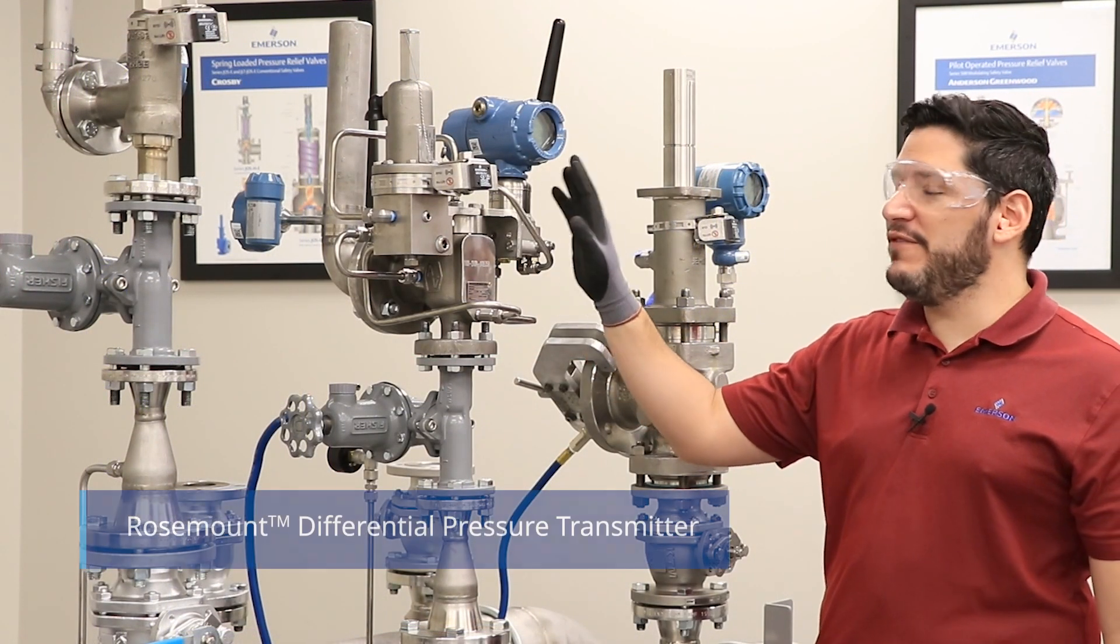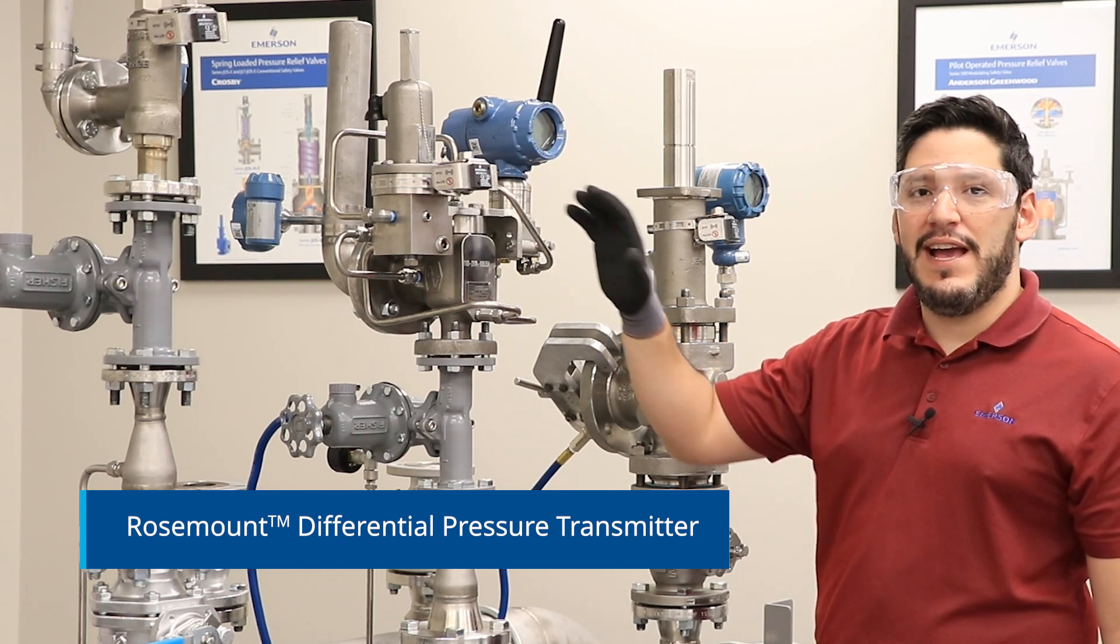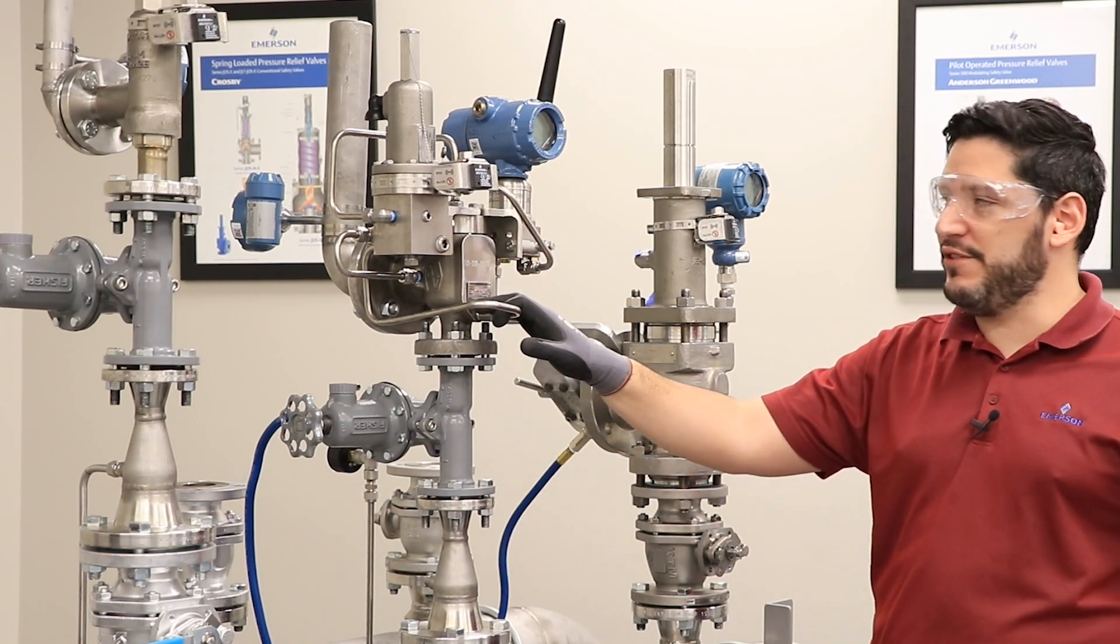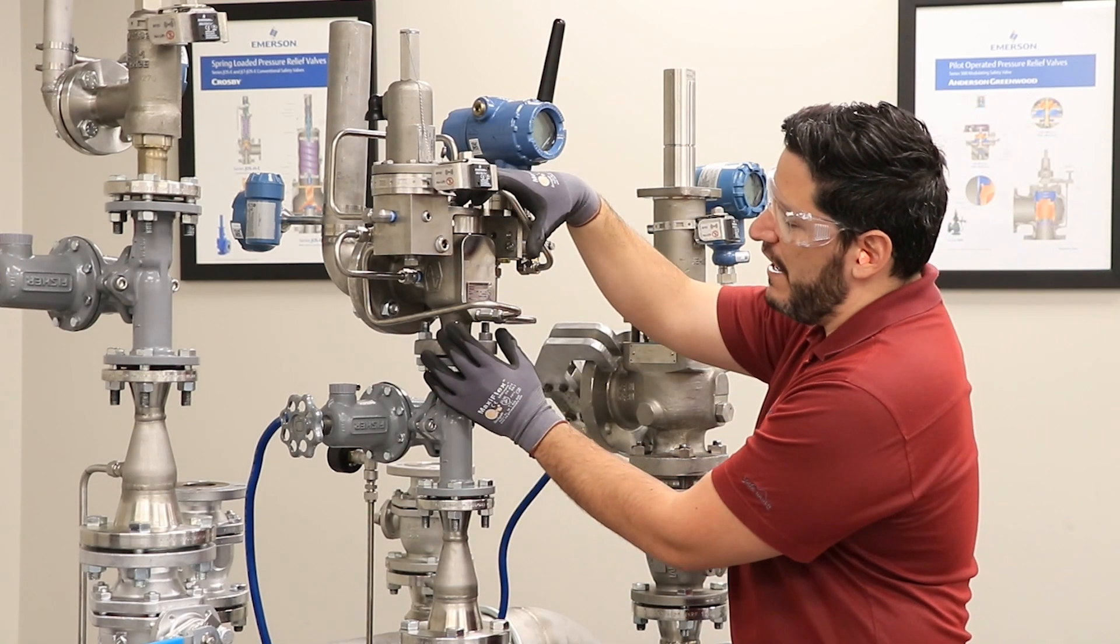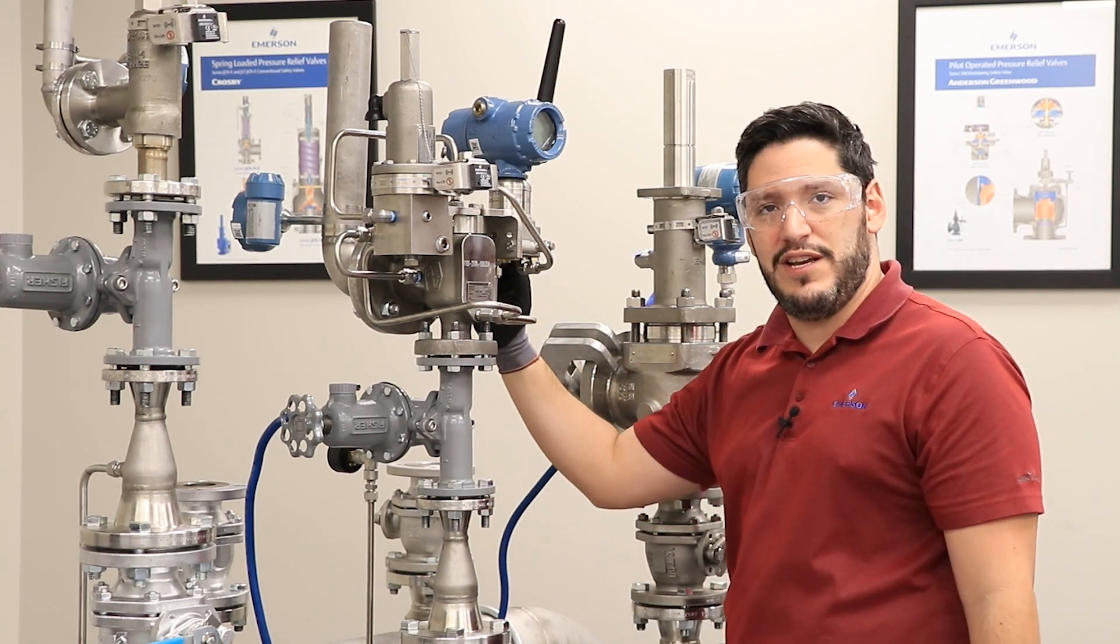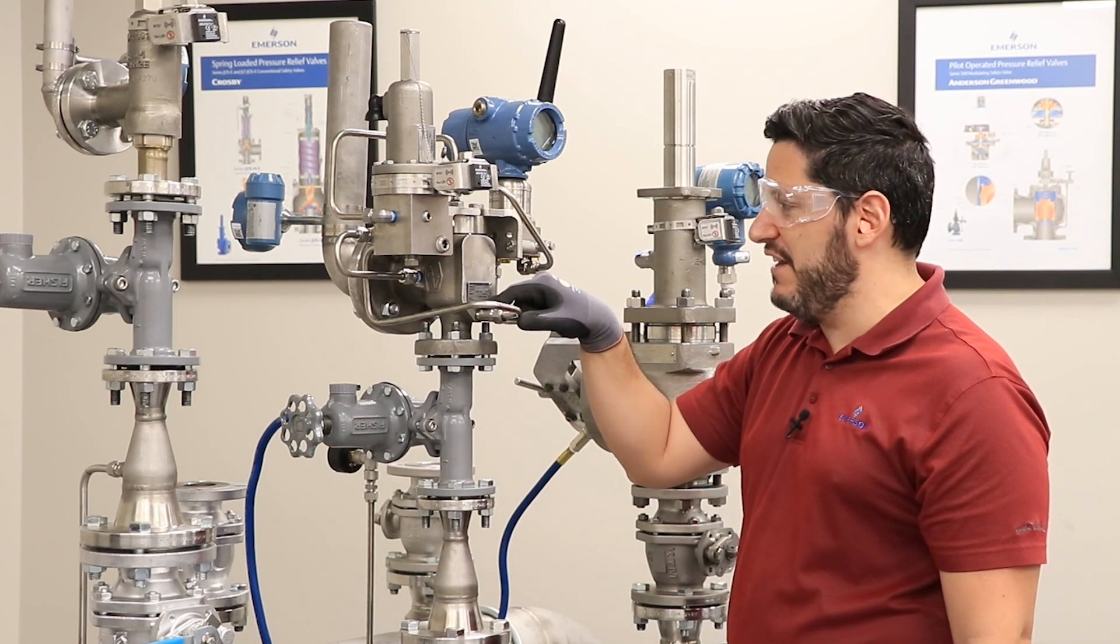This is our differential pressure transmitter, which we use for our high pressure and low pressure Emerson pilot operated relief valve monitoring. The way that this works is the main valve has a pressure pickup port. We take the high side of the differential pressure transmitter into the pressure pickup port at the inlet of the main valve.